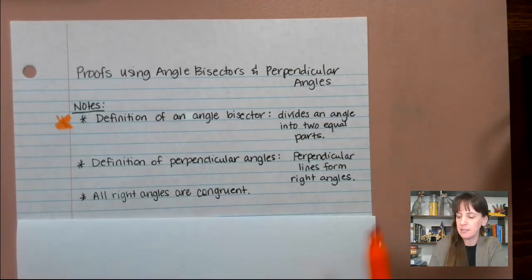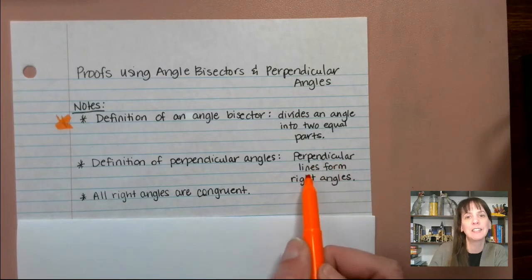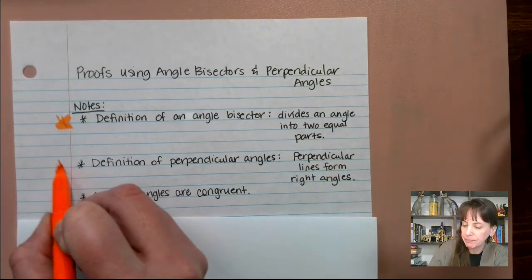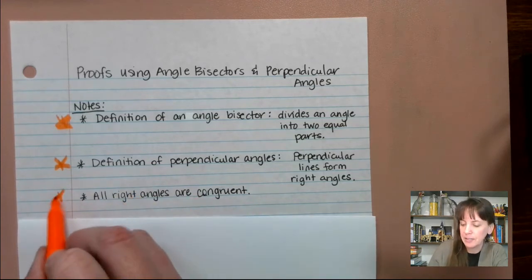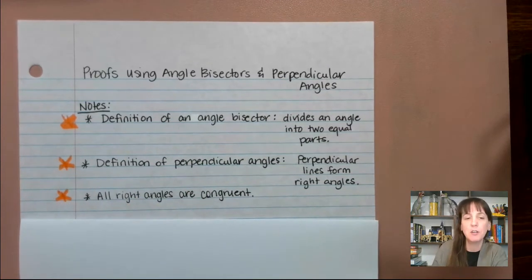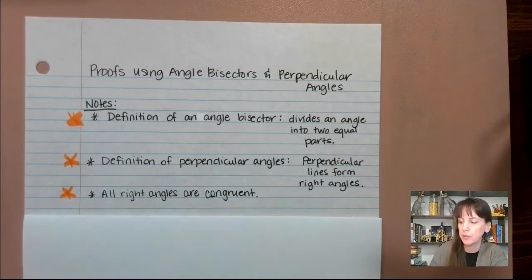Definition of perpendicular angles is that perpendicular lines form right angles. So perpendicular angles are then right angles. All right angles are congruent. That's another good one. So those notes, make sure that you've written those down because those are going to be important.